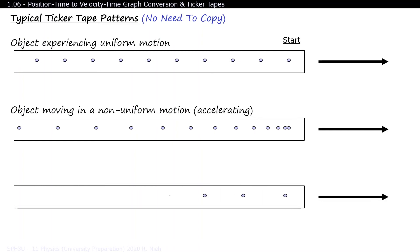What about the third ticker tape? At first, the dots are far apart, meaning that the object was moving very quickly. But as time went by, the dots got closer and closer, meaning that the object was decelerating.